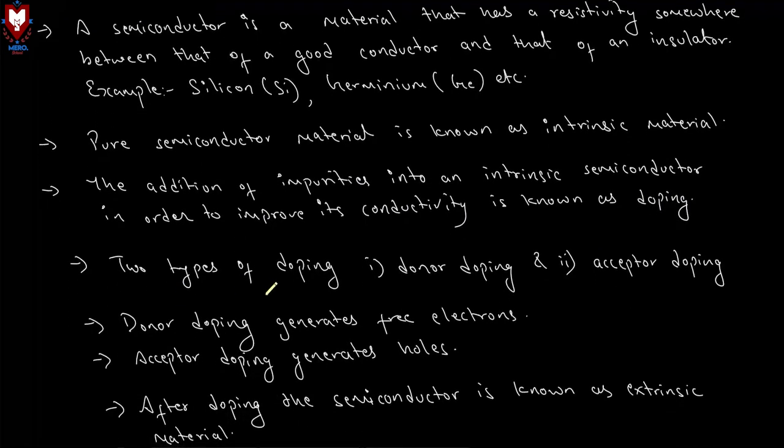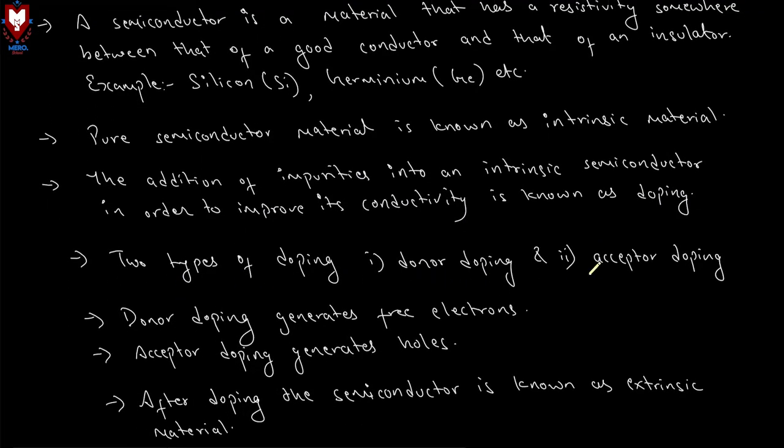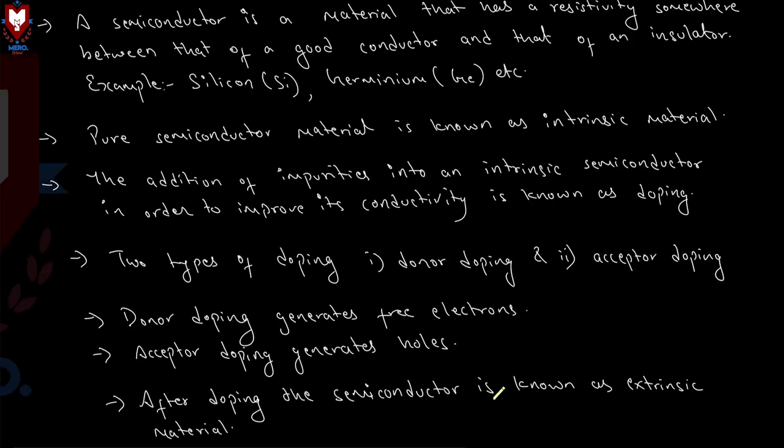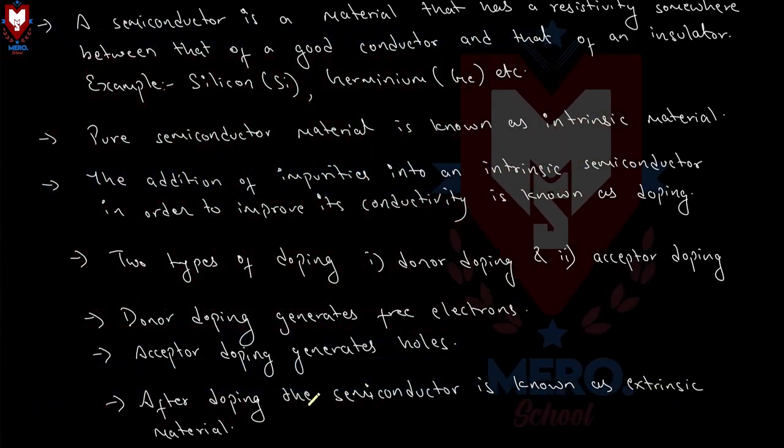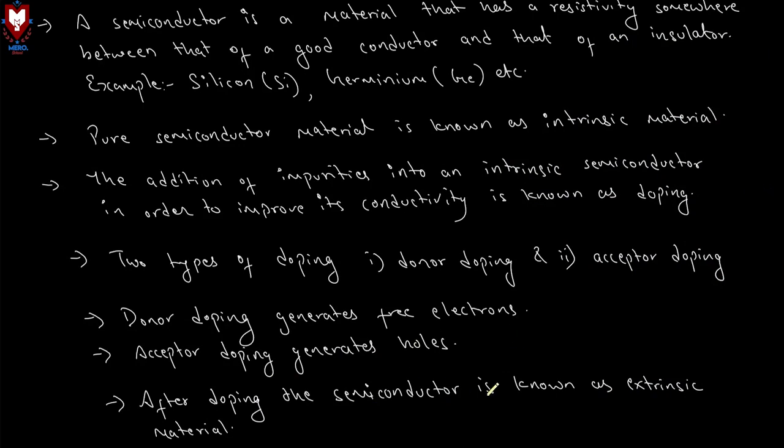There are two types of doping: donor doping and acceptor doping. Donor doping produces free electrons. Acceptor doping generates holes. After doping, the material is known as extrinsic material.